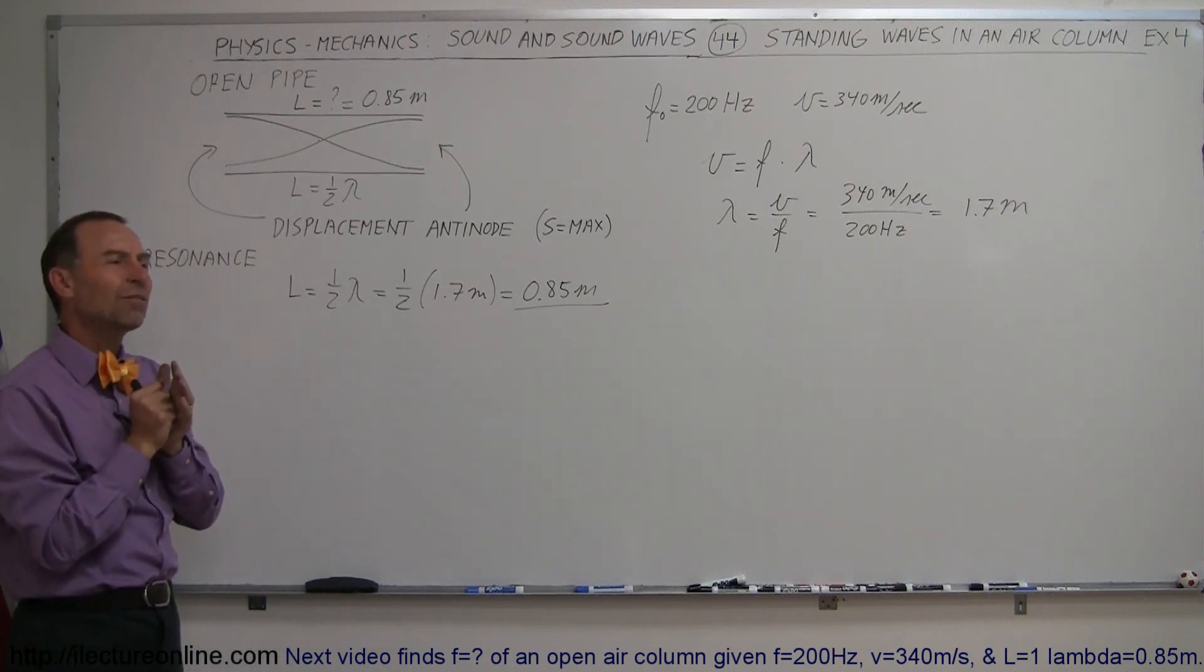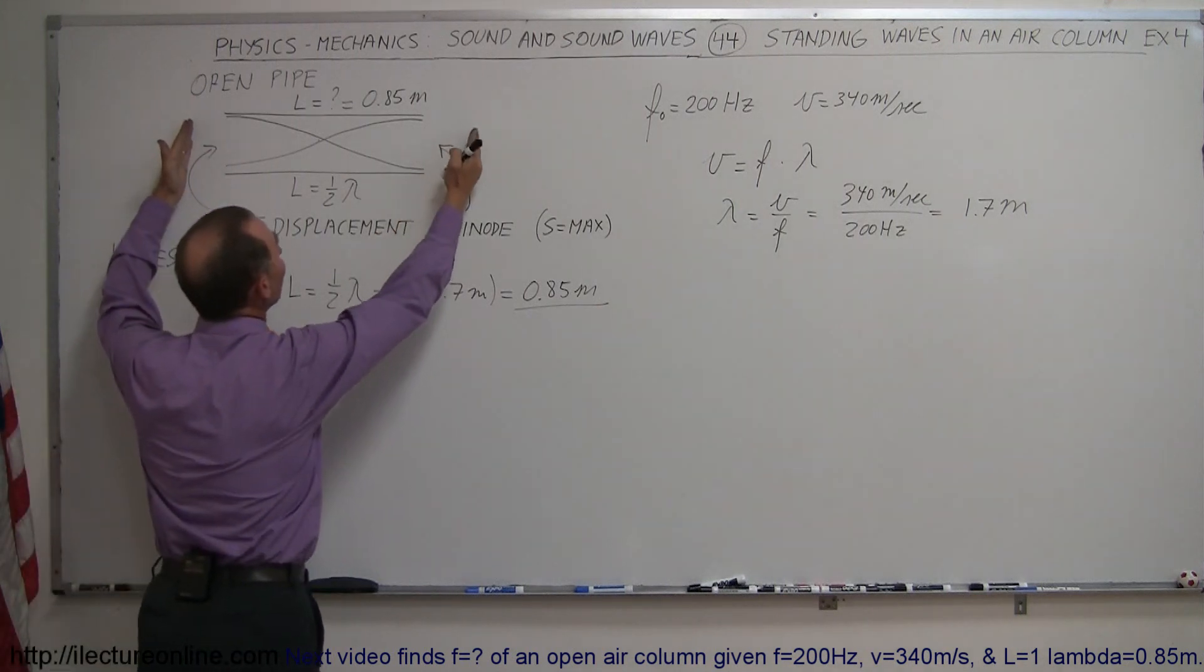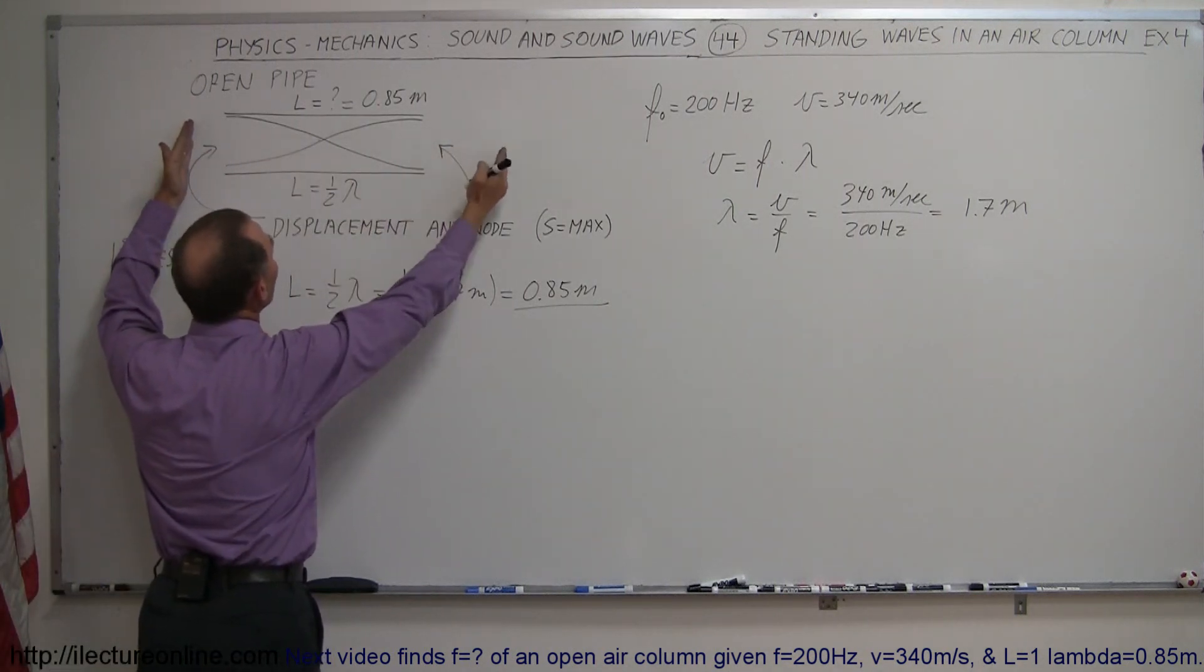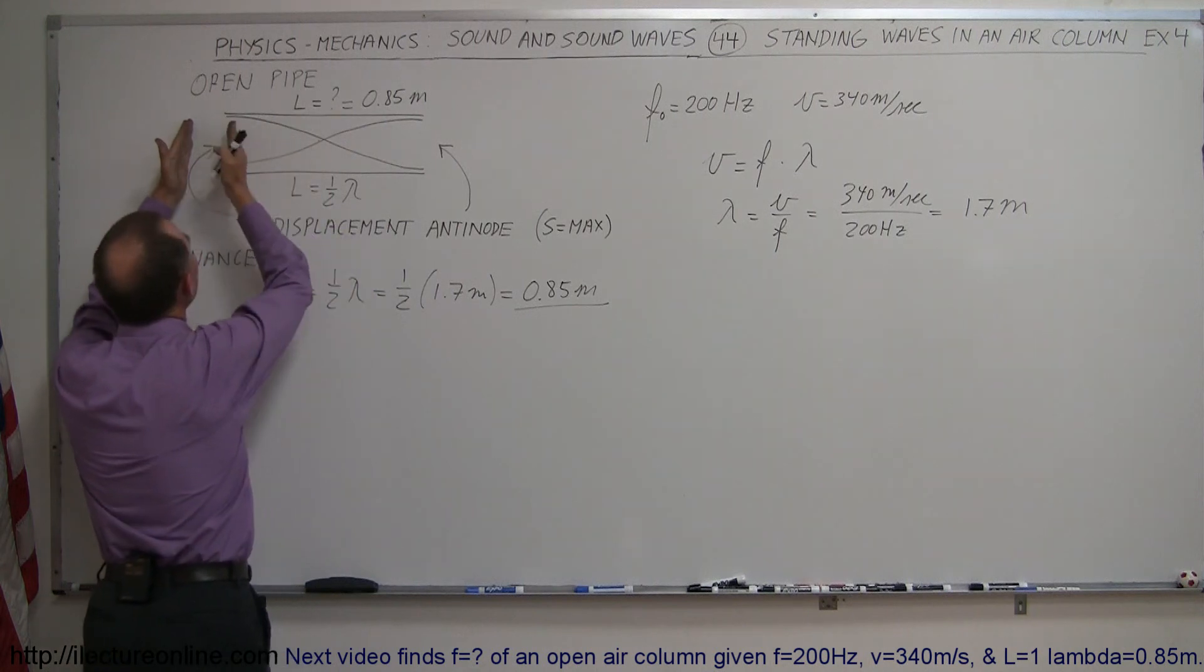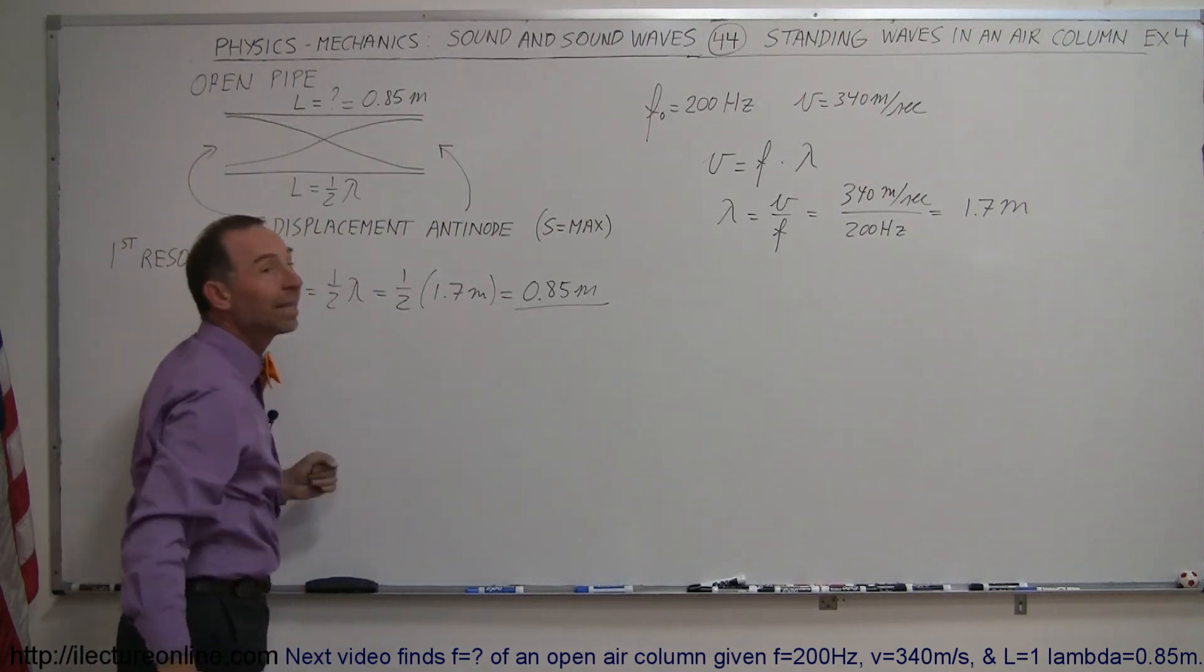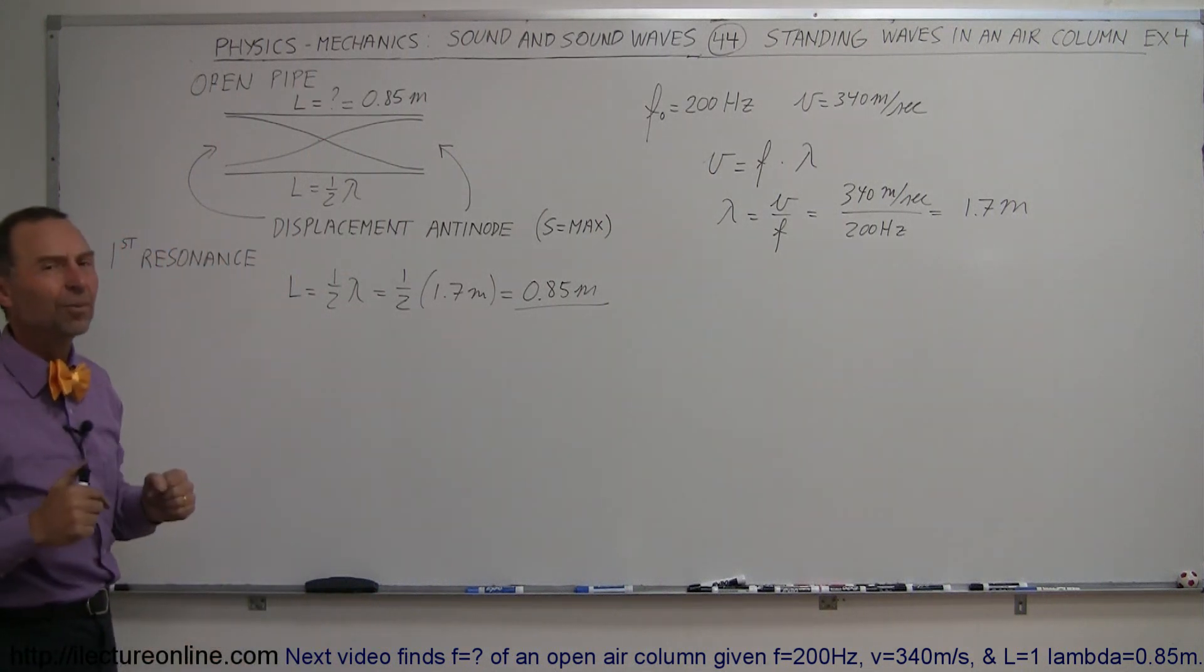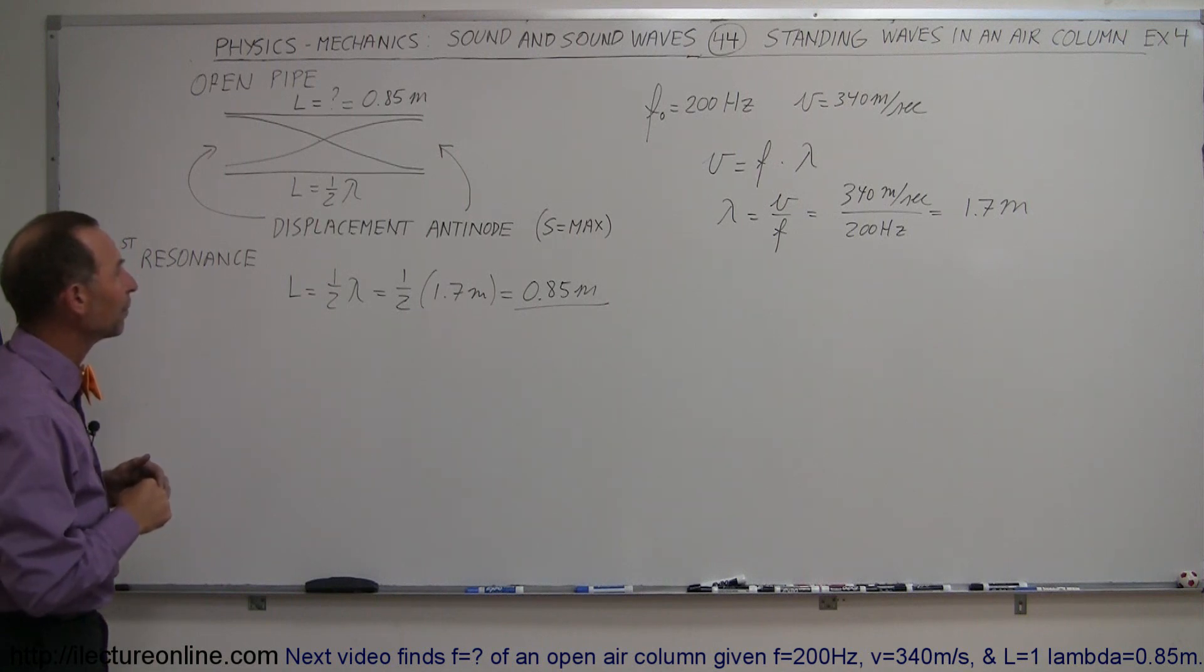Well, notice there's a displacement antinode here. Displacement antinode means you have zero pressure difference right here, which means you have greater pressure difference outside the tube. So the sound going on one side will see that greater pressure difference at this point, and some of the wave energy will get pushed back the other direction. That's how you can set up a standing wave.